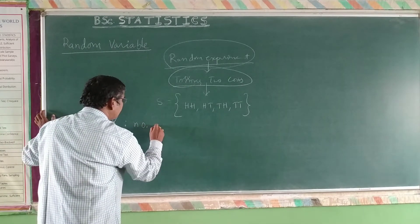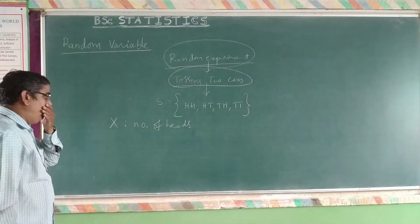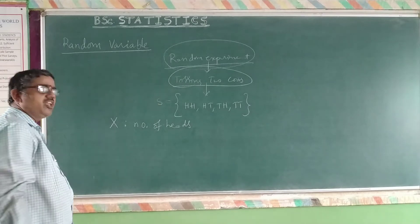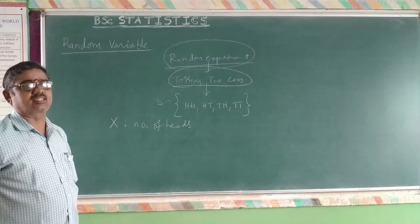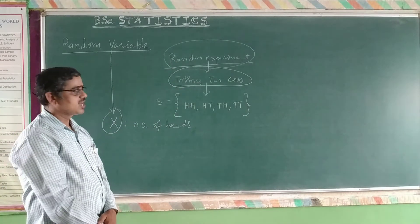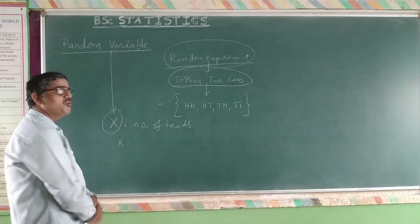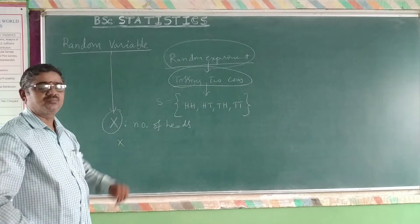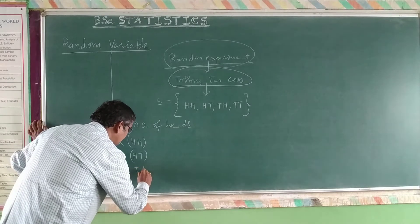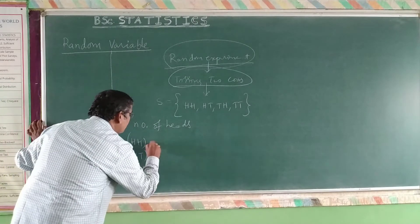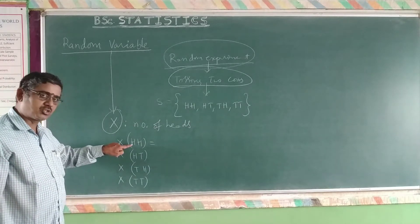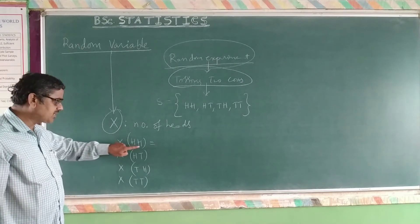In this particular example, I consider X as the number of heads. We have to define X on each and every outcome of the sample space — that is, on each outcome: X of HH, X of HT, X of TH, X of TT. How do you define this? It is very clear — it is the number of heads, meaning how many heads there are when you toss two coins in each particular outcome. If the outcome is HH, then the number of heads is two.